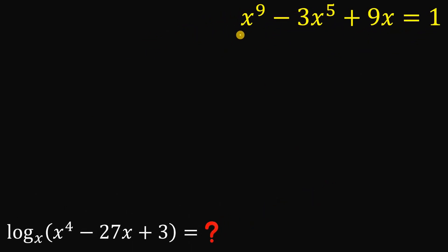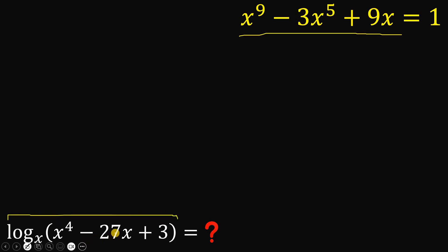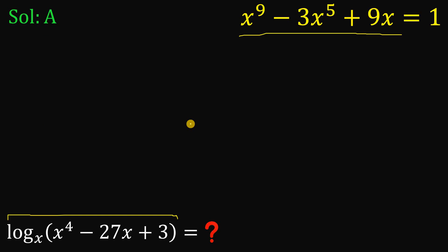In this question, given the equation x raised to the power of 9 minus 3x raised to the fifth power plus 9x equals 1, our goal is to find the numerical value of logarithm of x raised to the fourth power minus 27x plus 3 to the base of x. We have two different solutions. The second solution is much shorter than the first, so you can skip to the second solution if you want.